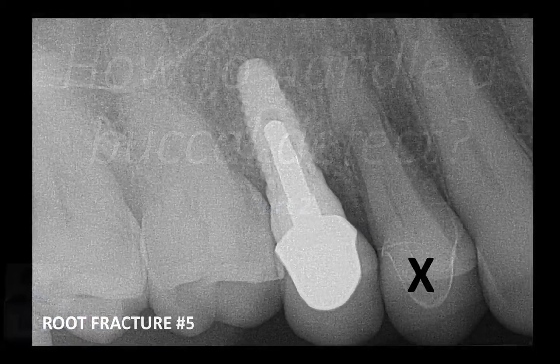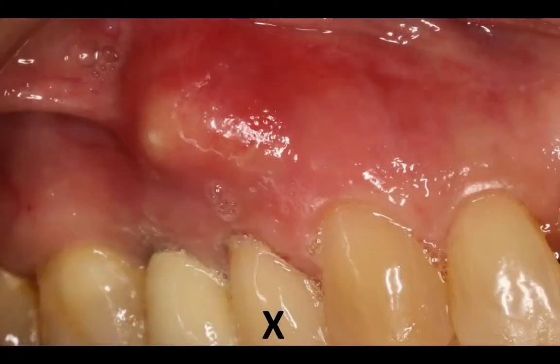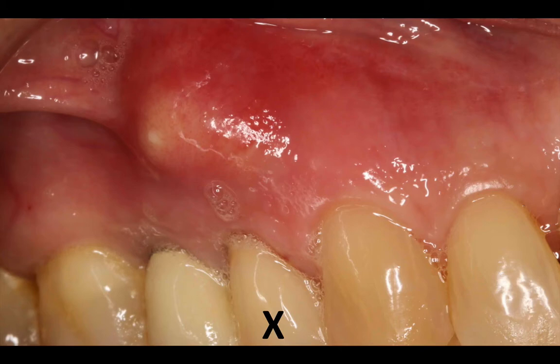In the previous video, I showed you a case where a patient presented with a root fracture of tooth number five and a sinus tract, an infection on the buccal, knowing that there is a very likely compromise to the buccal plate. If you didn't watch this first video, go back and watch it so you have some of the background and key points to consider when preparing for a case like that.